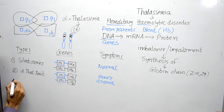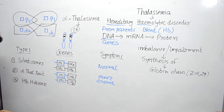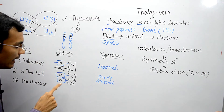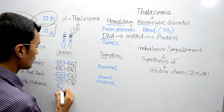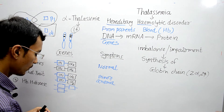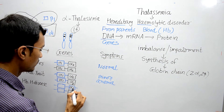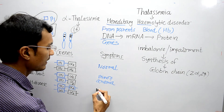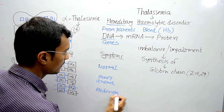The third subtype is Hemoglobin H Disease. In Hemoglobin H disease, two genes coding for Alpha 1 globin chain and one gene coding for Alpha 2 chain are missing, leaving only one gene present and functional. This person with Hemoglobin H disease has moderate anemia.